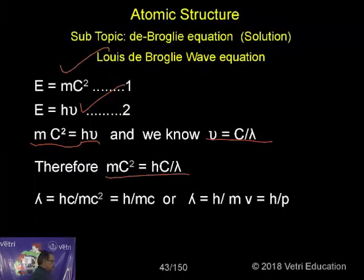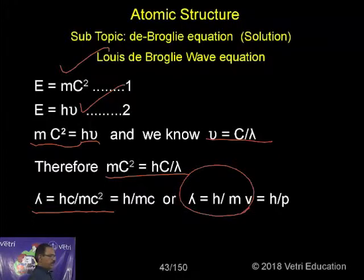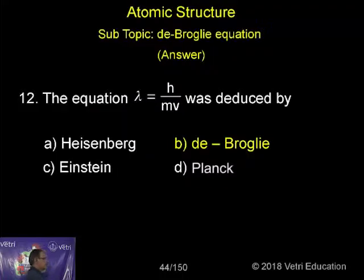So lambda equals hc by mc squared, which simplifies to h by mc. Or lambda equals h by mv, where v is the velocity. You can apply c for light, or write it as h by p, where p is momentum. This is the de Broglie equation.